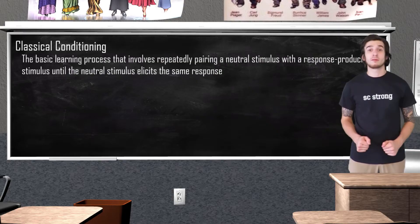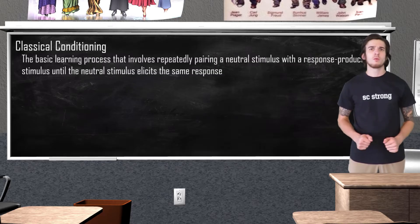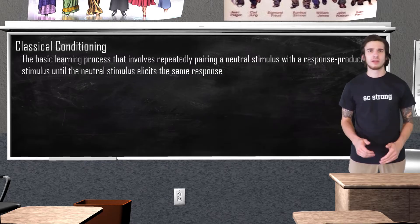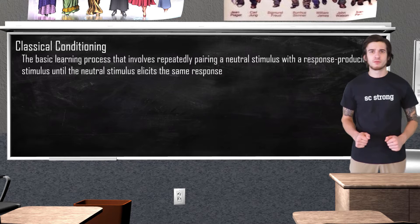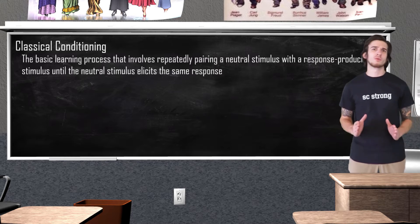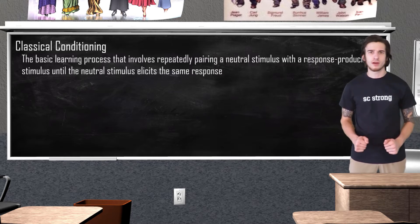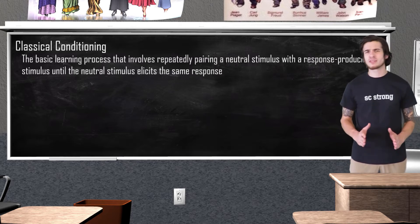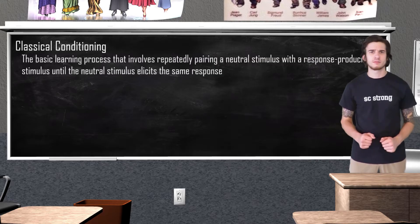Classical conditioning became a topic of study in the field of psychology in the 1920s when John B. Watson had his Little Albert experiment. But as mentioned, I will go into more detail on that in the unit 4 review video. What we're focusing on in this video is how exactly this type of learning takes place.